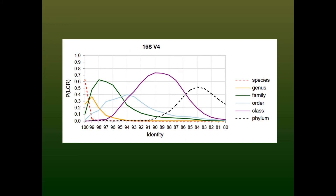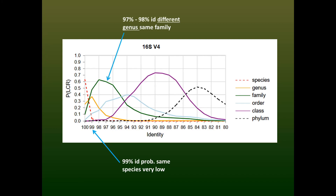Here is the plot for the V4 hypervariable region, which is around 250 nucleotides long compared to 1,500 nucleotides for the full-length gene. Even at 99% identity, the probability that the sequences belong to the same species is very low, confirming that 100% is a better species clustering threshold for V4. At 97% to 98%, the sequences most likely belong to different genera in the same family, which shows that the standard 97% threshold may have a strong tendency to lump different genera together into the same OTU, as well as different species. At 93% to 95% identity, the lowest common rank could be family, order, or class.